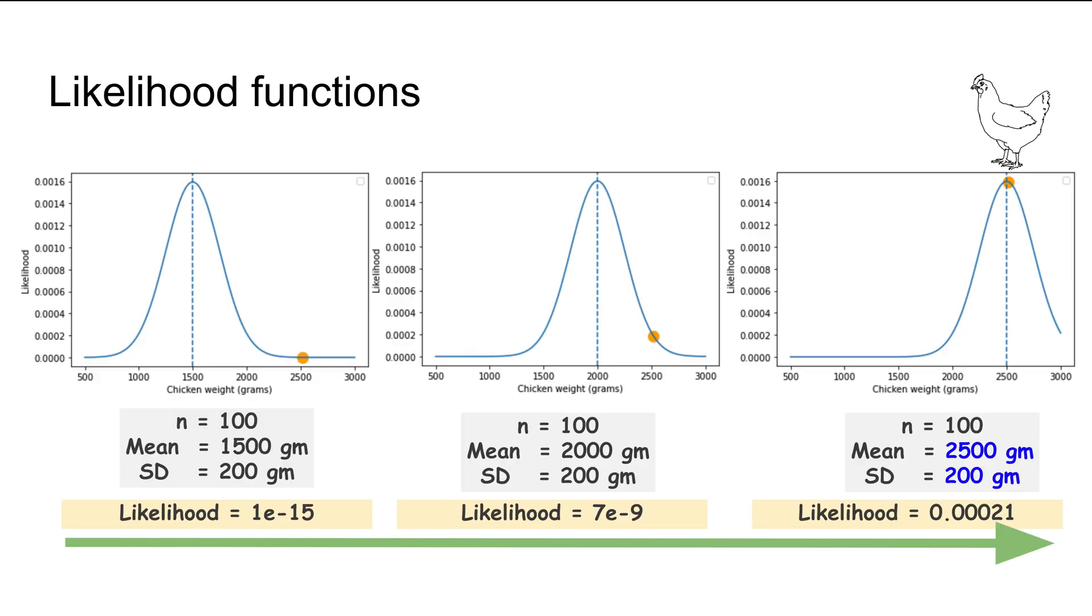If you look at these three plots going from left to right, what's changing is the mean. In the leftmost plot, the mean is 1500; in the middle plot, it's 2000; and in the rightmost plot, it's 2500. The n and standard deviation are the same for all three plots. The orange dot shows the weight we measured for the chicken at 2500 grams.